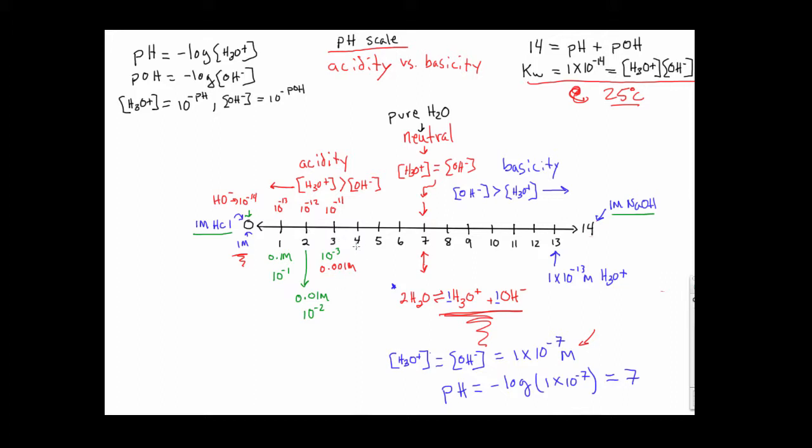When we get to pH 4, the trend continues. So here we're going to have 10 to the minus 4th molar in H3O plus. Similarly, the hydroxide will have gained by another step of 10, and it will be at 10 to the minus 10 molar. When we get to pH 5, the concentration of H3O plus now is going to be 10 to the minus 5th. It's steadily decreasing by a factor of 10 each time we move from one unit to the next. And then we see for the hydroxide that it has increased to 10 to the minus 9th here.